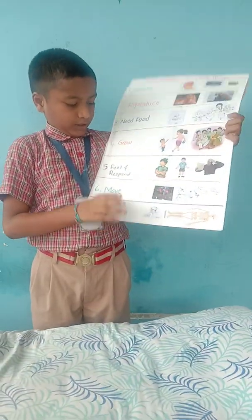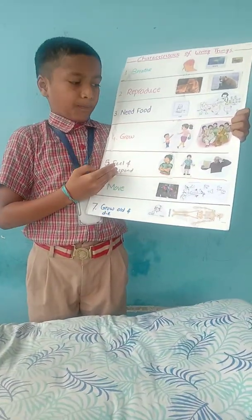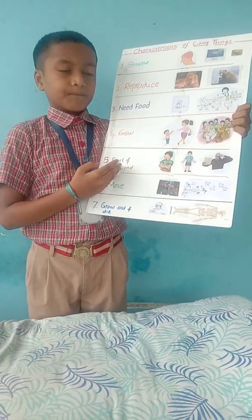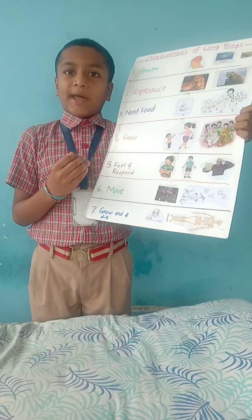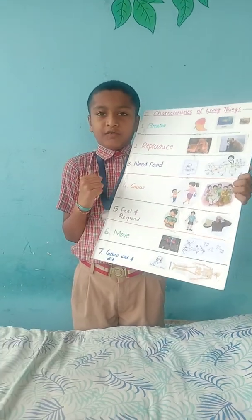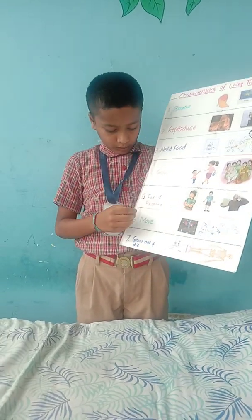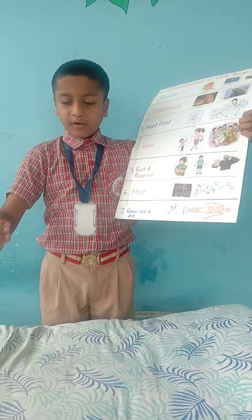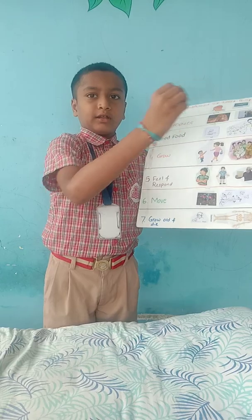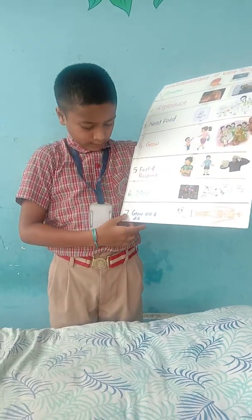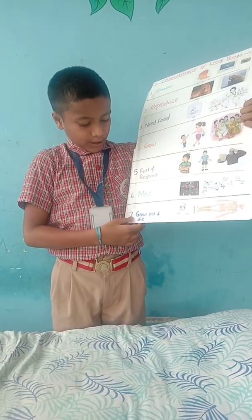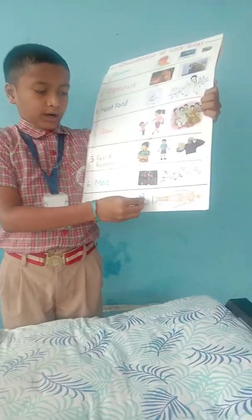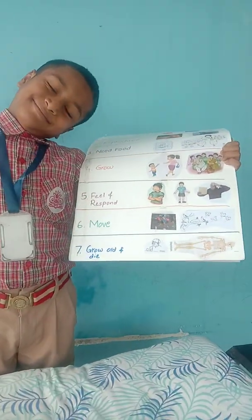Fifth, they feel and respond. When the climate changes, we feel and respond. Sixth, we move from one place to another place. Seventh, grow old and die.